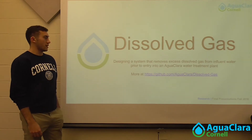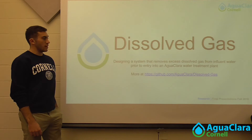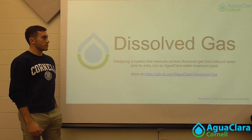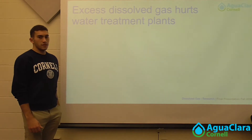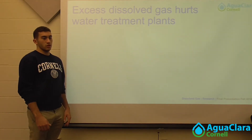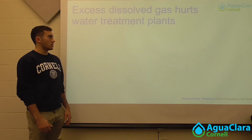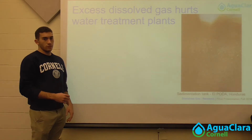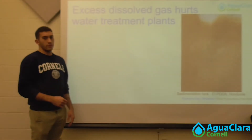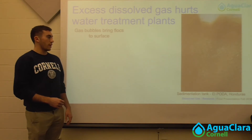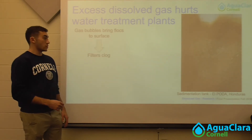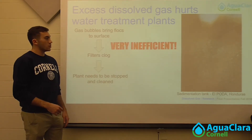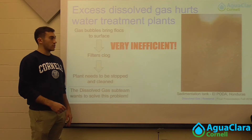This past semester we have been working to design a system to remove excess dissolved gas from influent water entering all the CLARA treatment plants. The reason we want to do this is because when influent water enters the plants with dissolved gas, all that dissolved gas accumulates into bubbles in the sedimentation tank. The bubbles cause large flocs to rise to the surface instead of settling at the bottom of the tank, and because they can't settle properly they're carried into a sand filter at the end, which clogs the filter and leads to the whole system being very inefficient. If we can remove the dissolved gas prior to entry into the plant, then the system will be much more efficient and everything will run much more smoothly.